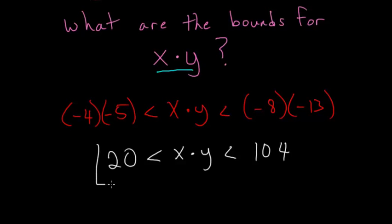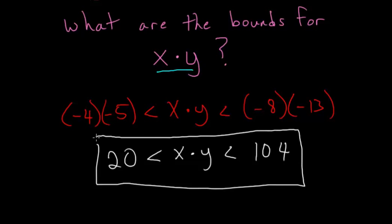So x times y is always bigger than 20, and it's always less than 104.